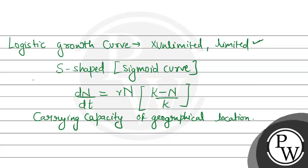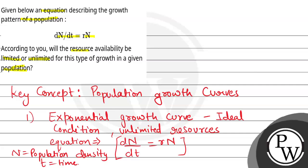That is the resource we are talking about here. Considering this question, the equation given is dN by dt equals rN, and we know that this equation represents an exponential growth curve. So the resources here will be unlimited. The final answer is: the growth in the given population will be of having unlimited resources. I hope you understood well. Best of luck.